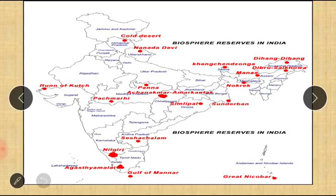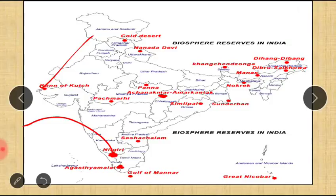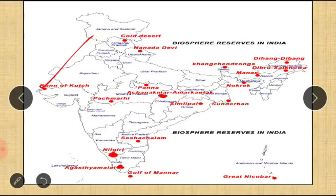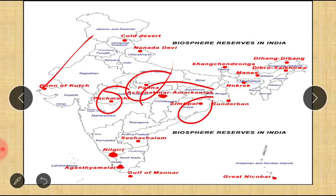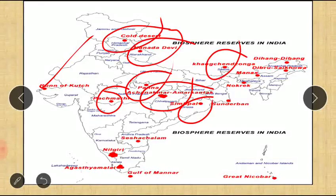Looking at the map of India showing the Biosphere Reserves: Kutch/Rann of Kutch is in Gujarat; Nilgiri is in TKK (Tamil Nadu, Karnataka, Kerala); Agasthyamalai is in Kerala; Gulf of Mannar is in Tamil Nadu; Sheshachalam is in Andhra Pradesh; Simlipal is in Odisha; Panna is in Madhya Pradesh. This concludes the overview of the Biosphere Reserves of India.